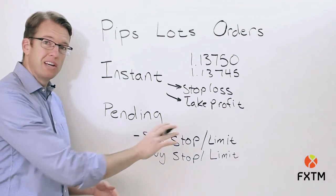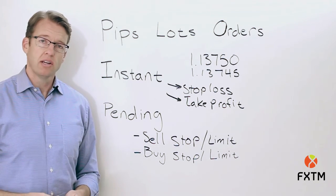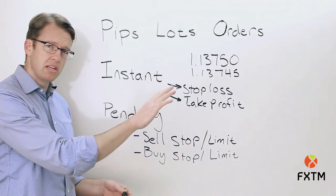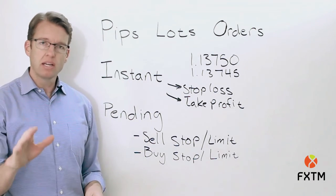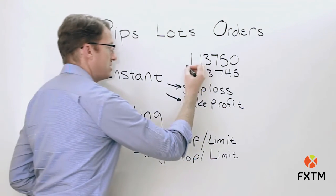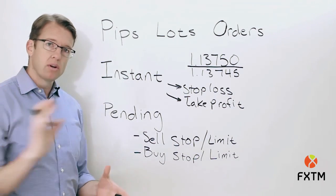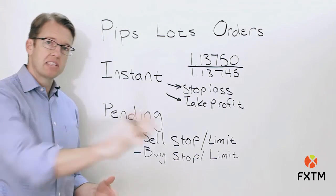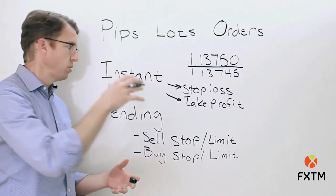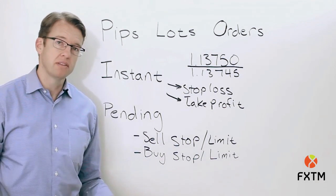Finally, there is market execution. Market execution is somewhat similar to instant execution, except that it gives you the market price at the moment the order is sent — which may be exactly the price you planned, slightly better, or slightly worse. Once your order is filled at market, you can then go in afterward to set pending orders that will act as a stop loss or take profit level.